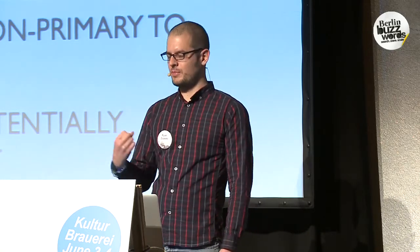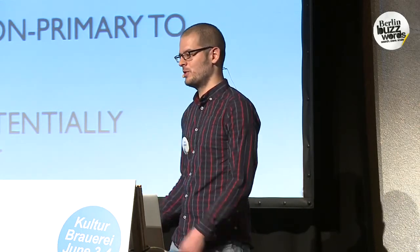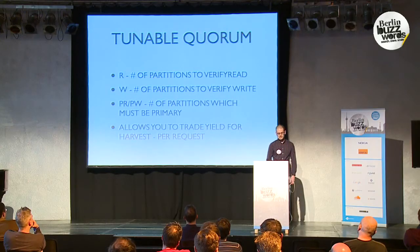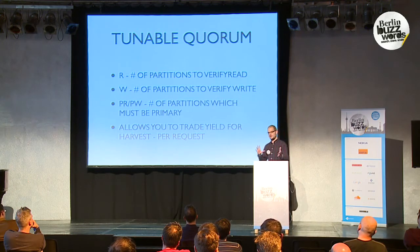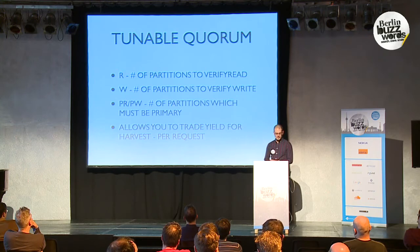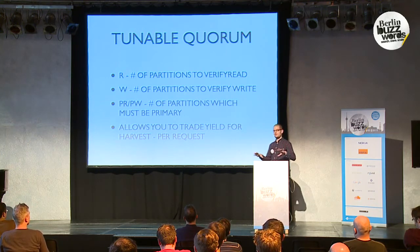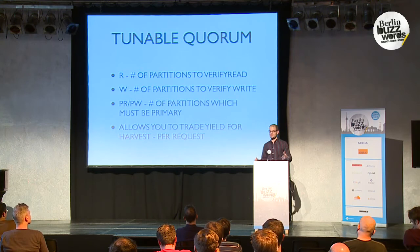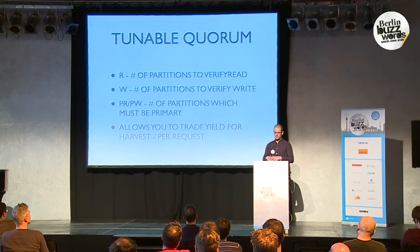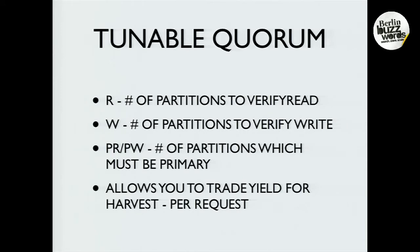What sloppy quorum gives you is 100% yield, but potentially degraded harvest as well. Another idea in React which allows you to trade yield versus harvest parameters is tunable quorum. You have the N replicas and then knobs R and W. You always make a request to all N — so if N is three, it goes out to all three. But you can say 'I only care that two respond and give me a value.' For writes you can say 'I just want to wait for one owner to ack the write.' So it allows you to trade off some latency and also your harvest for yield. And this is per request. There's also PR and PW, which adds the notion of requiring a minimum number of primaries involved.